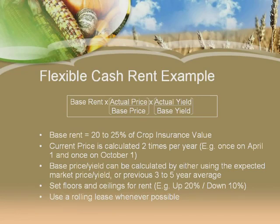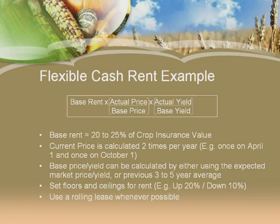We also suggest setting a floor and ceiling for this rent. In a bad year, you can say the amount you'll pay will only go down 10% from the base rent — that's the landlord's maximum downside. In a good year, you'd be willing to pay 20% more above that base rent formula, which is an incentive for him to join this concept. We suggest using a rolling lease where possible, and I'll come back and talk about that.